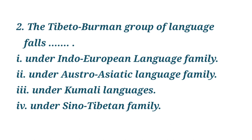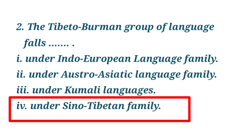Question 2: The Tibeto-Burman group of languages falls — I. Under Indo-European language family; II. Under Austro-Asiatic language family; III. Under Kamali languages; IV. Under Sino-Tibetan family. Correct option: IV.